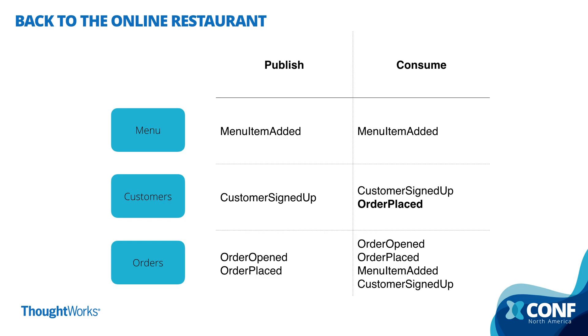Let's go back to our example — the online restaurant — and think about it in a serverless way. Let's imagine we implement the same example using AWS. The important thing is that the bounded contexts or services we have are still going to be the same, because the domain did not change. The only thing changing is the implementation. We still have the contract between services modeled as events — the services still publish and consume the same events. But now the internal structure of each service will be different. We're still going to rely on CQRS and Event Sourcing, but instead of having a single service, we're going to have a composition of functions and infrastructure components.